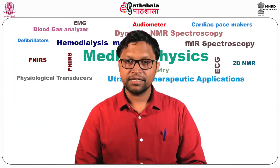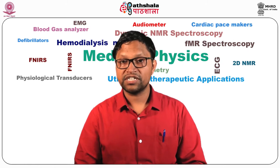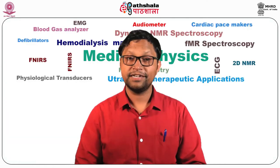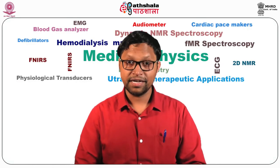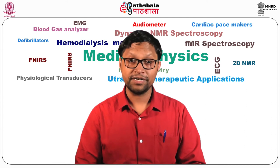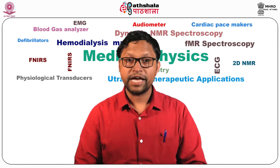We validated the BARC impedance plethysmograph equipment at our Autonomic and Vascular Function Lab in the Department of Physiology. A typical setup is shown for recording cardiac output monitoring in various physical conditions. The impedance plethysmography is a simple and versatile technique. It is also used to measure global or focal brain blood flow, which is called rheoencephalography. The electrode placement uses the 10-20 system of electrode placement.